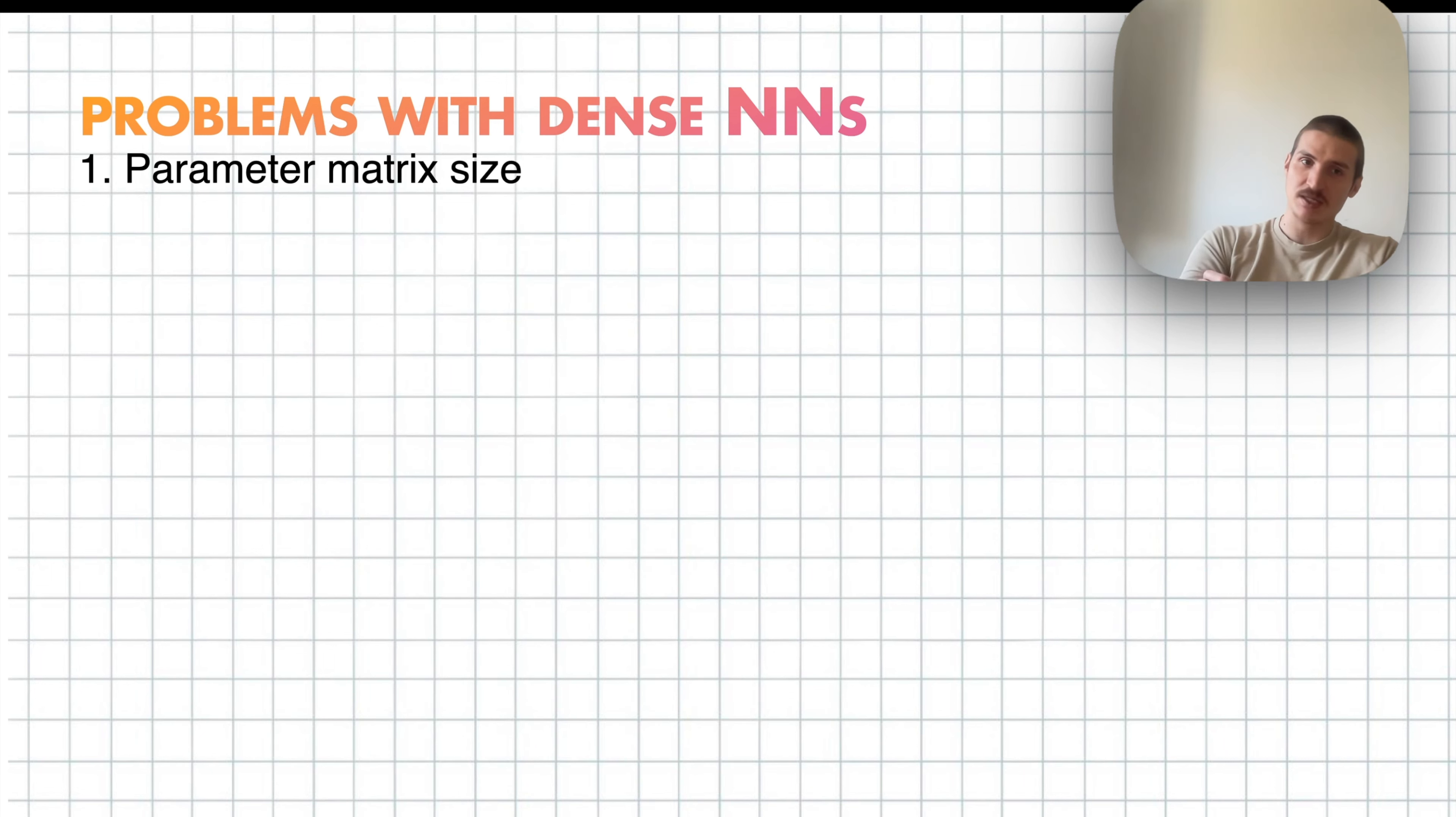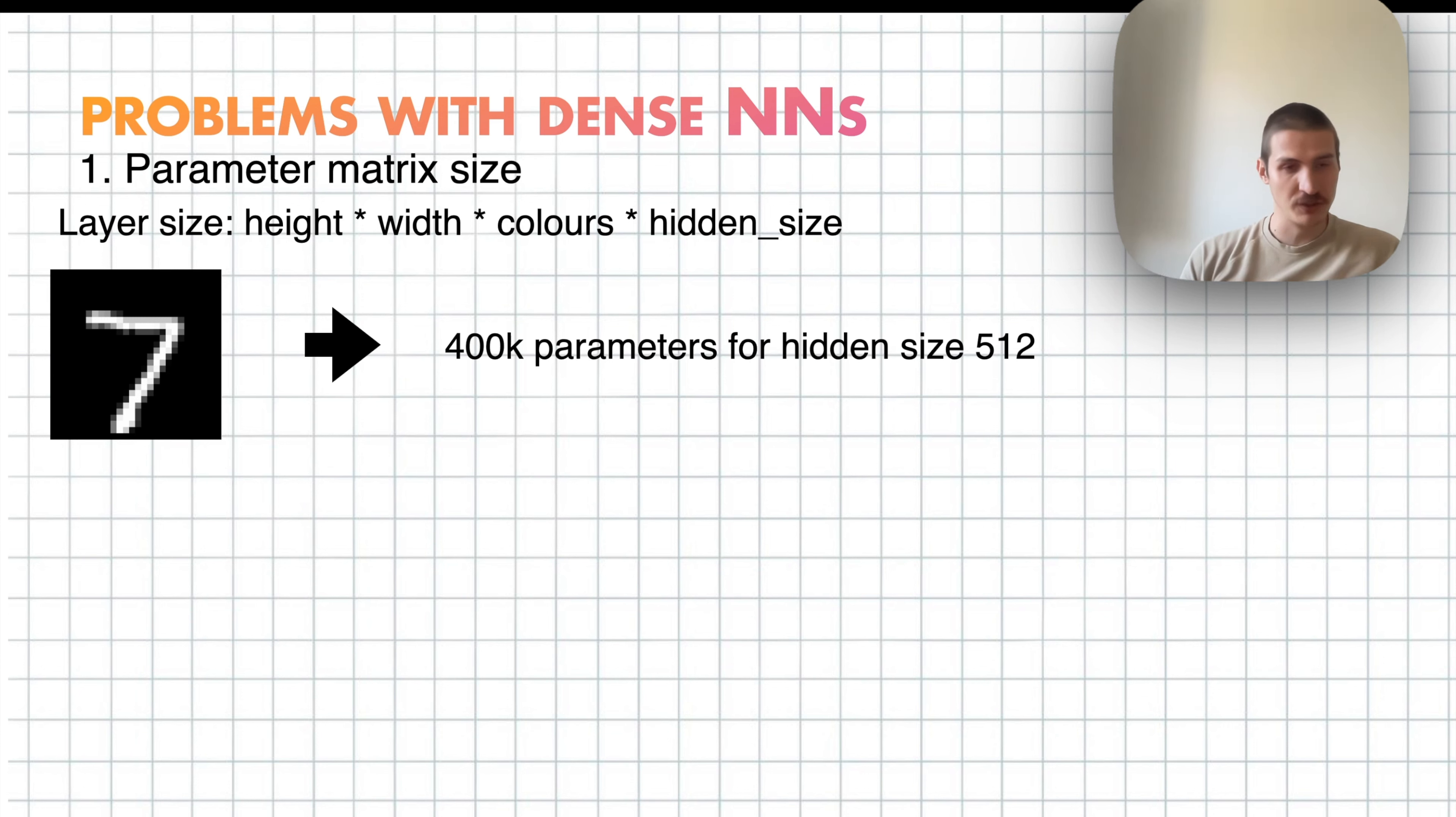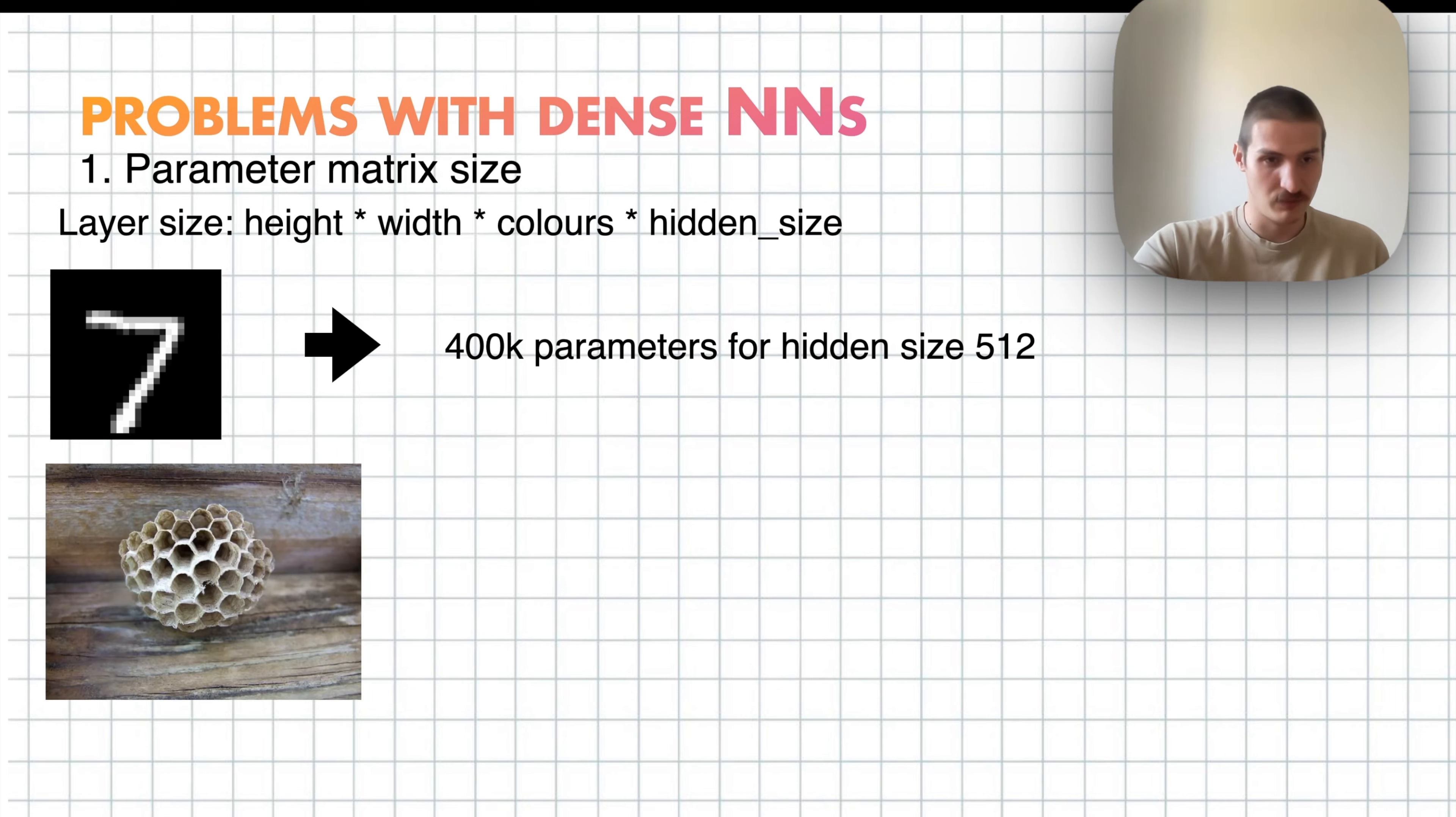So first problem is just the parameter matrix size. The size is input times the output. So the output is the hidden size of the network in our case. And then the input size is basically the number of pixels in an image times the number of colors. So for low resolution grayscale image like this, which is 28 times 28, this is something like 400k parameters, which is already not so great, because we'll have 60k training examples. So ideally, when training the network, you should aim to have more training examples than parameters to be able to effectively optimize those parameters. And if we were to go over something real like this with high resolution, that's already 400 million parameters. So we definitely don't have enough examples to optimize a network like that.